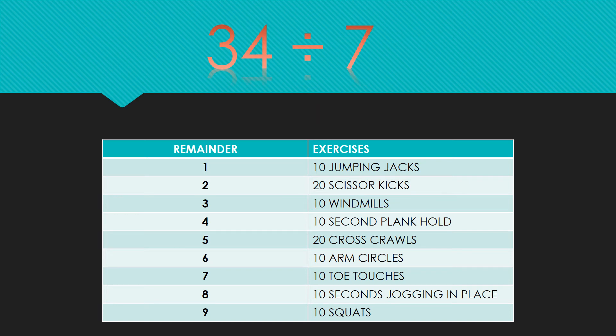This problem is 34 divided by seven. Pause the video to solve your problem, do your exercise and hit play. The answer is four with a remainder of six. So you should have done 10 arm circles.